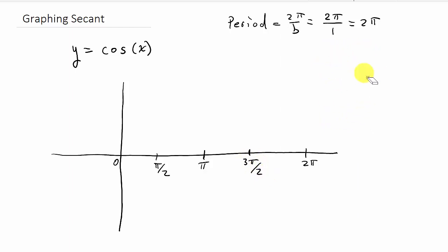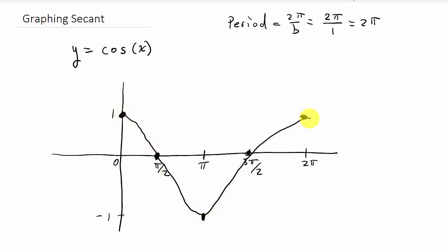We need our amplitude, which in this case is 1, so the largest and smallest values are 1 and negative 1. We're graphing from 0 to 2 pi over one period. Remember, cosine starts at its maximum, goes to 0, goes to its minimum, then back to 0 and back to its maximum.